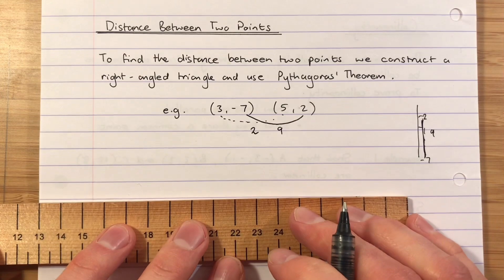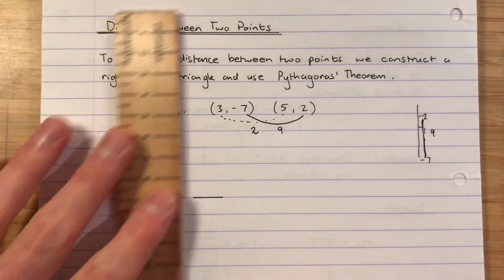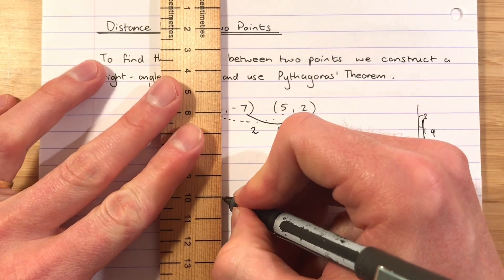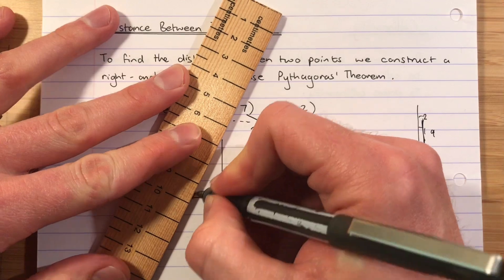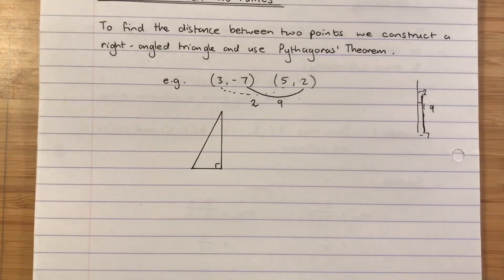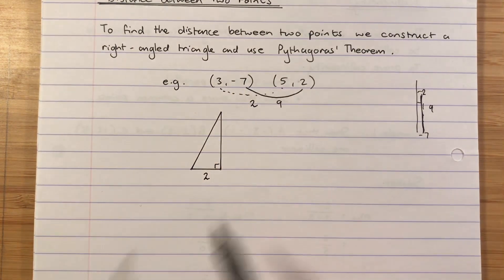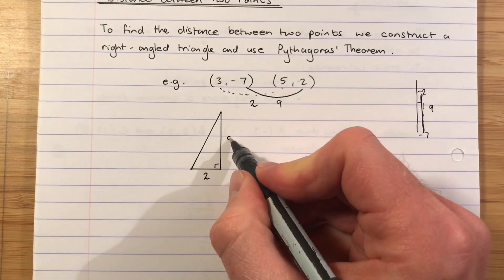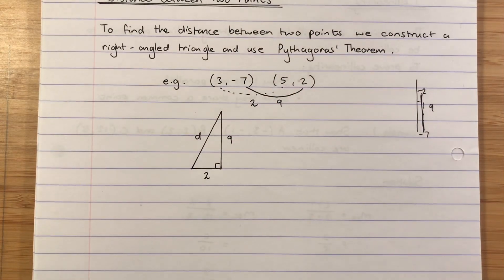That distance there will be 9 units. That allows me to construct a right-angled triangle. Now the drawing doesn't have to be to scale, but I'm going to do it roughly to scale because it's a bit more pleasing to do that. So the x distance is 2, the y distance is 9. Make sure you put your right angle on there. Horizontal distance is 2, that's the distance between the two x's. Distance between the two y's is 9. And we'll call this d for distance.